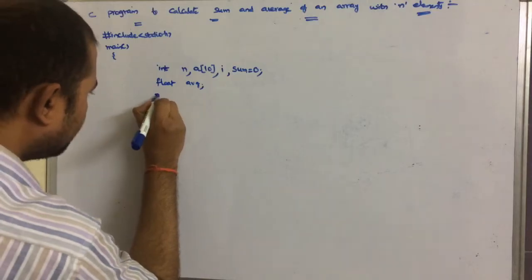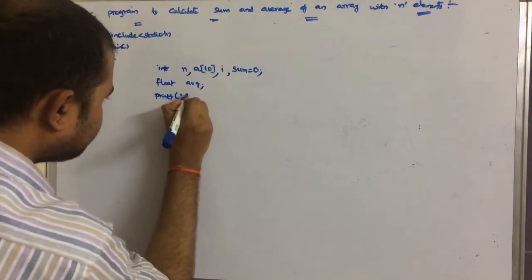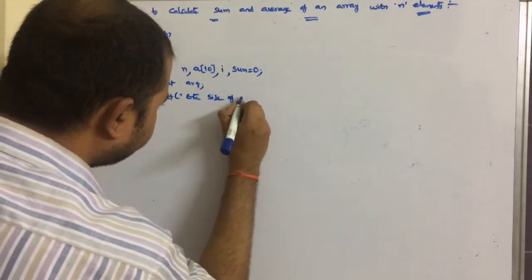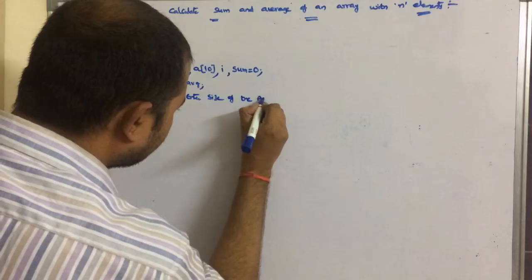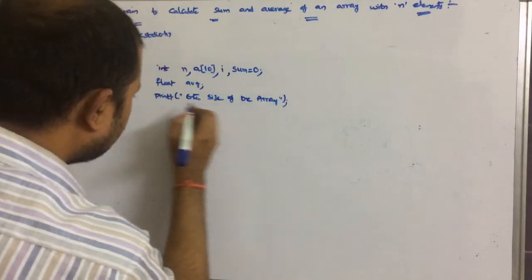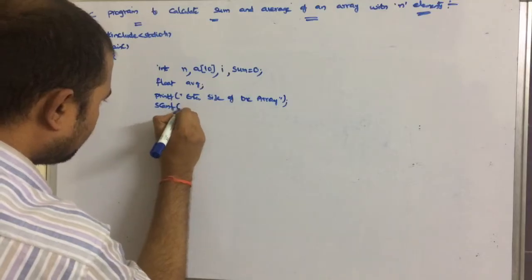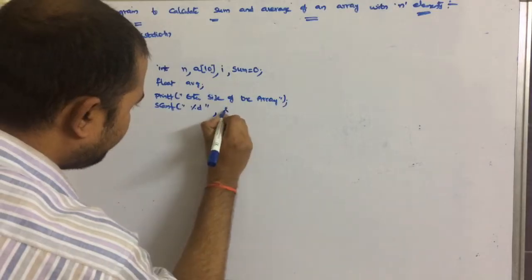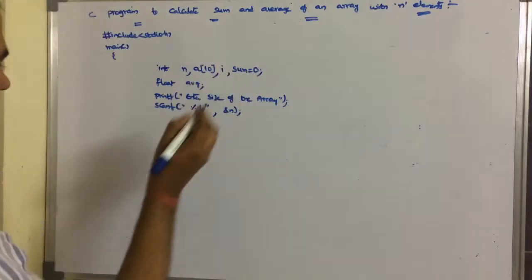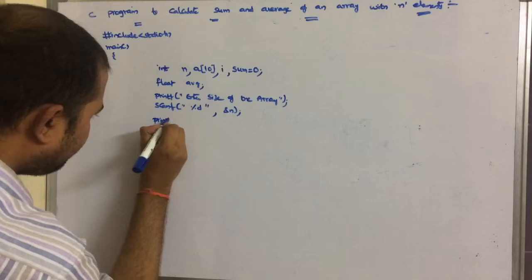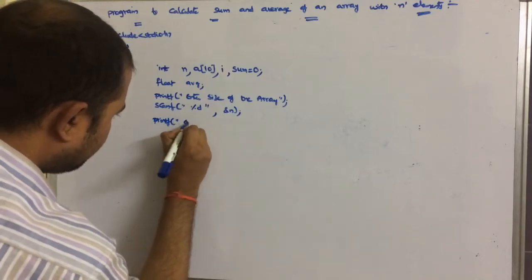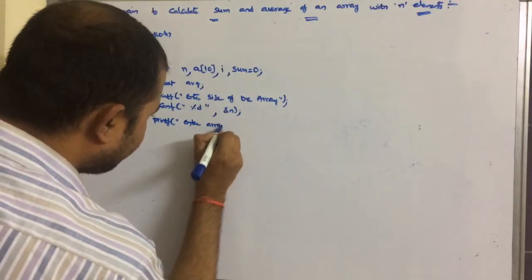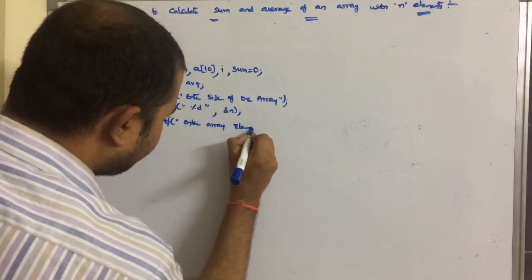First, read the size of the array: printf("Enter size of the array"), then scanf with format specifier %d and &n to read the integer value. Next, read the array elements — this is common to every array program. We use printf("Enter array elements").